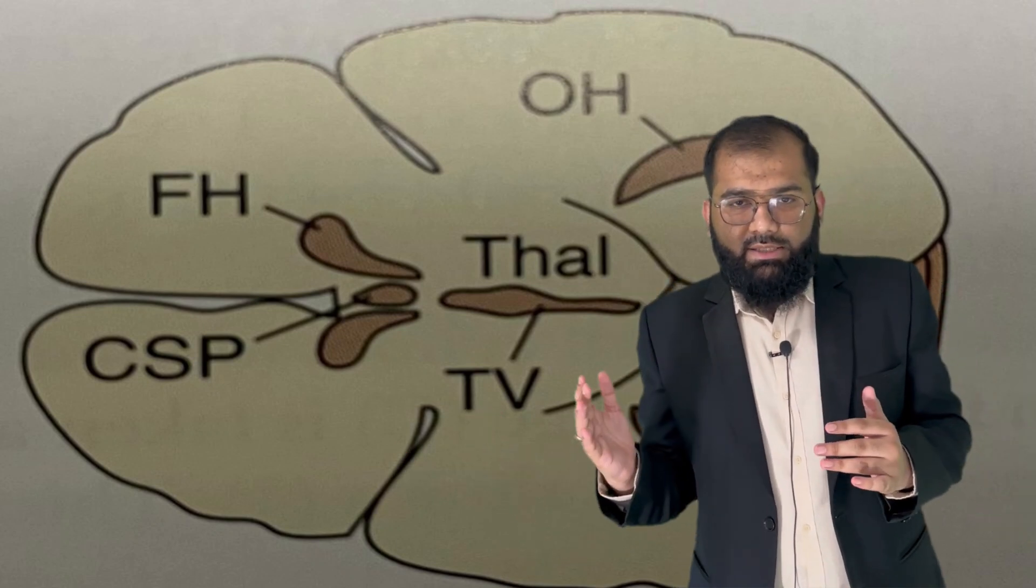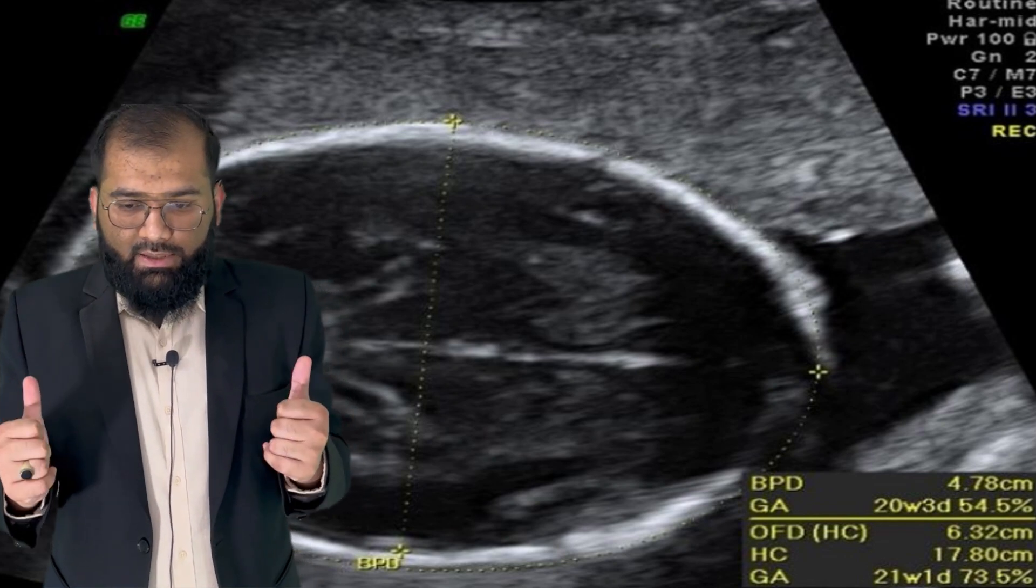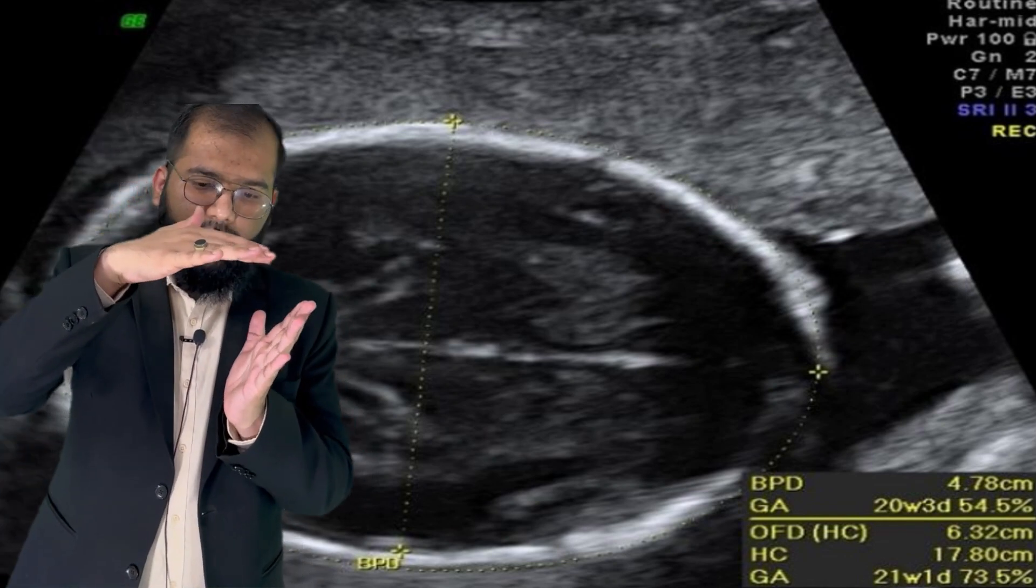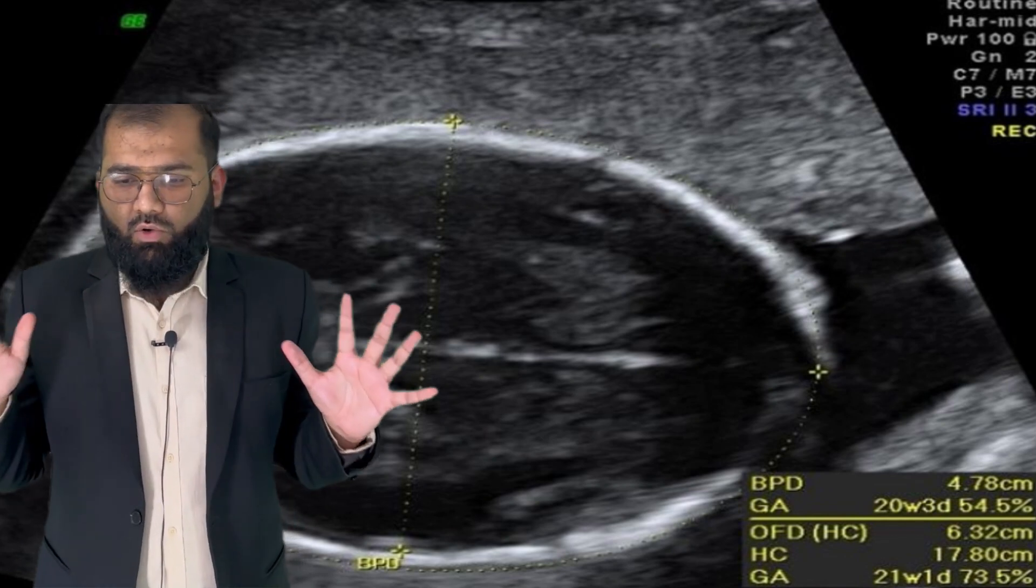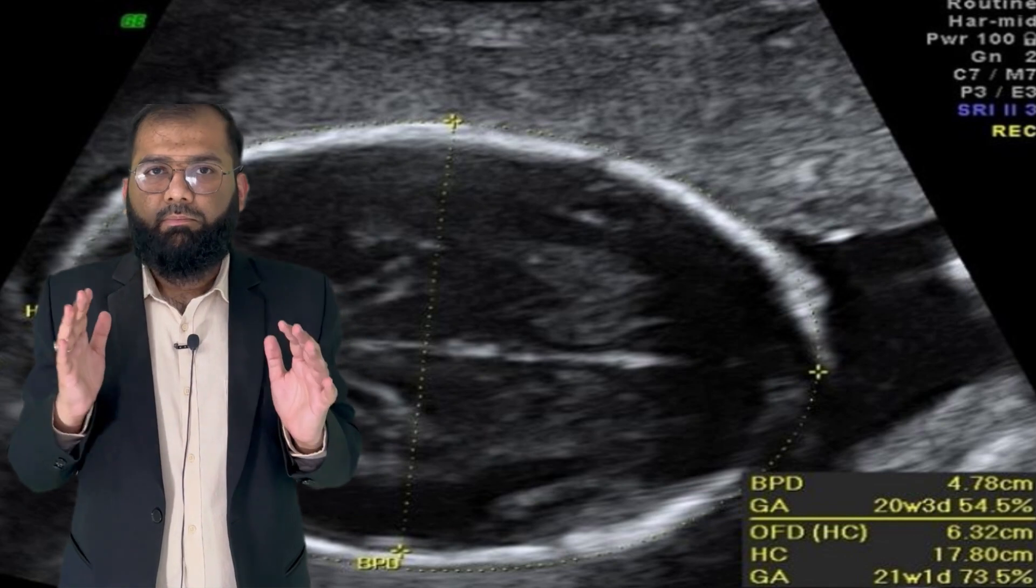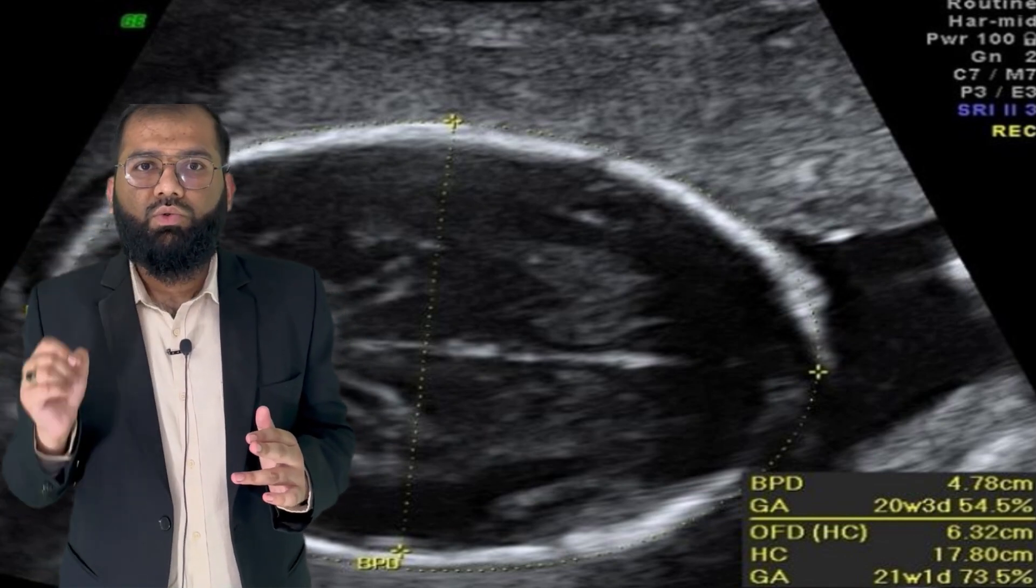Now we see the next image. In this image we are able to see the two thalami making a posterior arrow, and you are not able to see any cerebellar lobe. We take BPD, that is biparietal diameter, from the outer end to the inner edge.